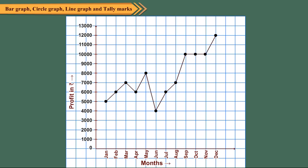Can you find any other three months in which the profits are same? Yes, the profits in the months of February, April and July are same, i.e. 6,000 for each month.